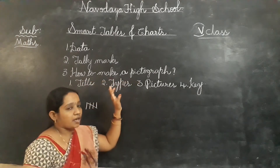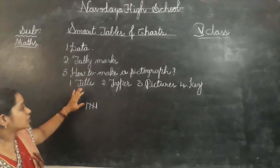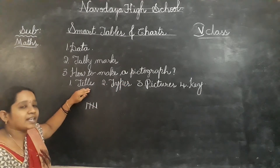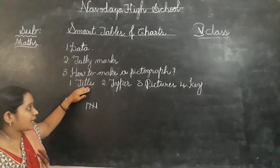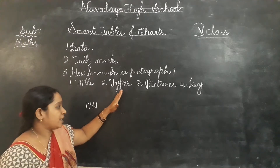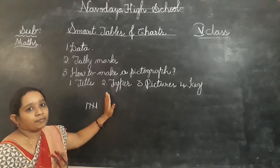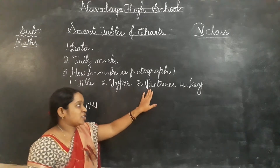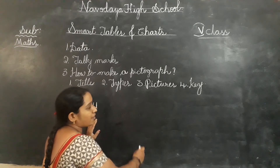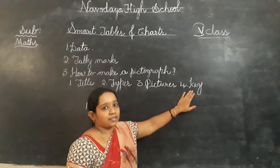How to make a pictograph? What are the terms in a pictograph? First, you have to give a title. Then types — you have to list types on the left of the pictograph. And pictures — you draw pictures on the right. Finally, you have to give a key.